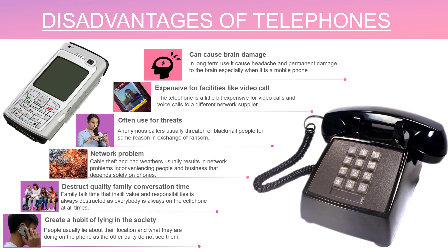That covers the advantages and disadvantages of cell phones, and we started off with the history of telephones. For Grade 7 learners, that's where we're going to end for now. The next topic will be differentiating between landlines and mobile phones and looking at advantages and disadvantages of both. Thank you very much — keep subscribing to our channel for us to keep making more of these valuable videos.